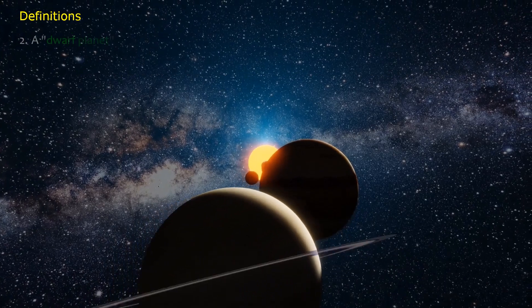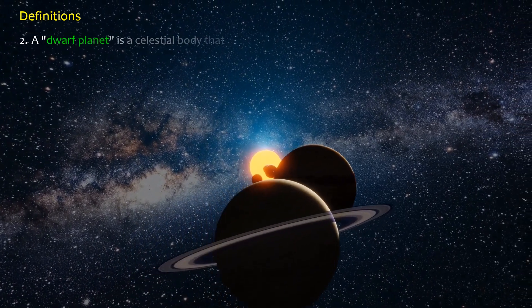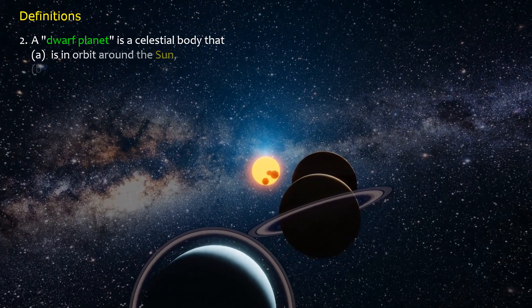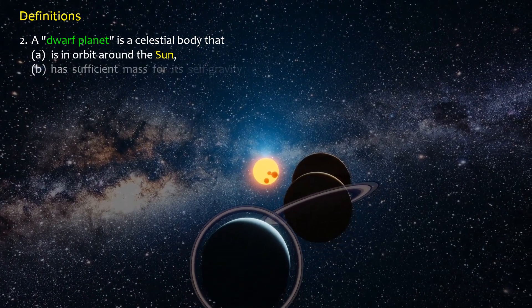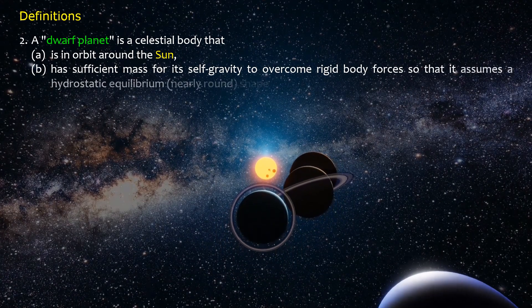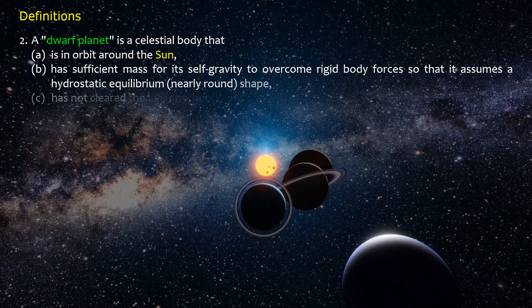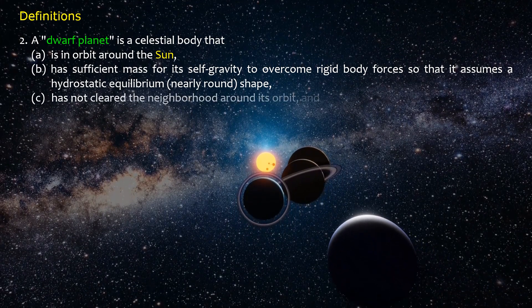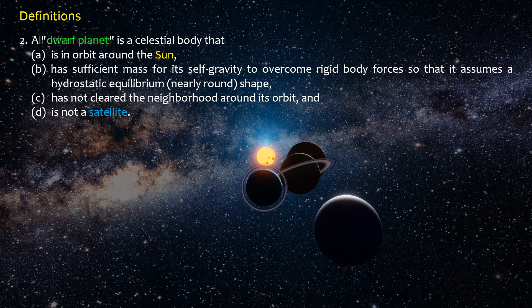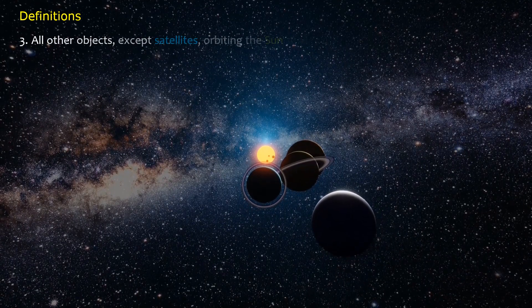Two: A dwarf planet is a celestial body that (a) is in orbit around the sun, (b) has sufficient mass for its self-gravity to overcome rigid body forces so that it assumes a hydrostatic equilibrium nearly round shape, (c) has not cleared the neighborhood around its orbit, and (d) is not a satellite.